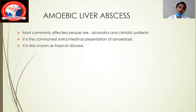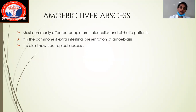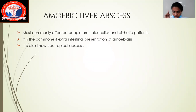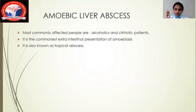The people most commonly affected by amoebiasis are alcoholics, who have an easy chance of getting amoebiasis which can progress to amoebic liver abscess. The second category is patients with alcoholic liver cirrhosis or non-alcoholic liver cirrhosis. The most common extra-intestinal presentation of amoebiasis is amoebic liver abscess, and since it is most commonly seen in tropical countries, it is also known as tropical abscess.